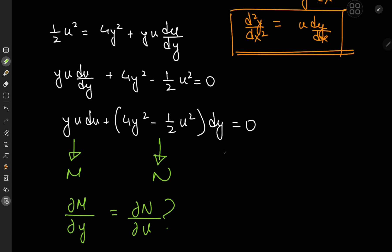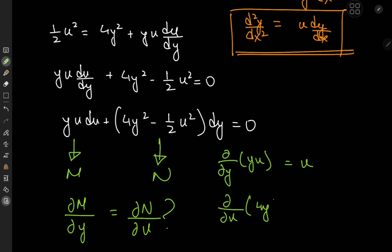Taking the partial derivative of yu with respect to y gives us u, whereas the partial derivative with respect to u of 4y squared minus one half u squared equals negative u. These are not equal, so the equation is not exact yet.